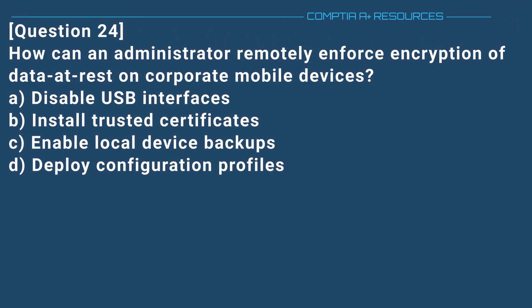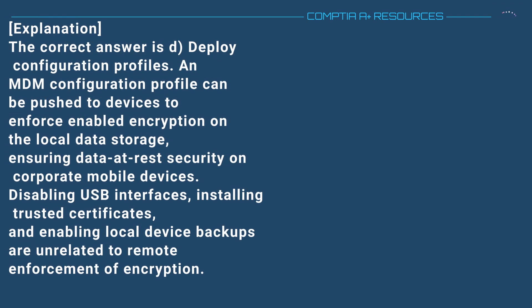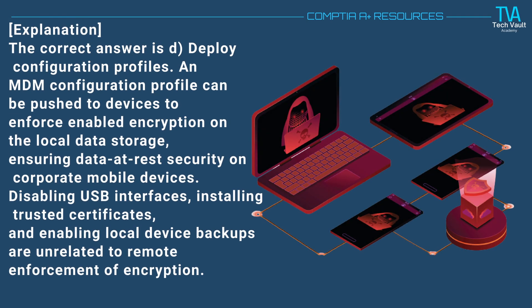Question 24. How can an administrator remotely enforce encryption of data at rest on corporate mobile devices? A. Disable USB interfaces. B. Install trusted certificates. C. Enable local device backups. D. Deploy configuration profiles. The correct answer is D. Deploy configuration profiles. An MDM configuration profile can be pushed to devices to enforce enabled encryption on the local data storage, ensuring data at rest security on corporate mobile devices. Disabling USB interfaces, installing trusted certificates, and enabling local device backups are unrelated to remote enforcement of encryption.